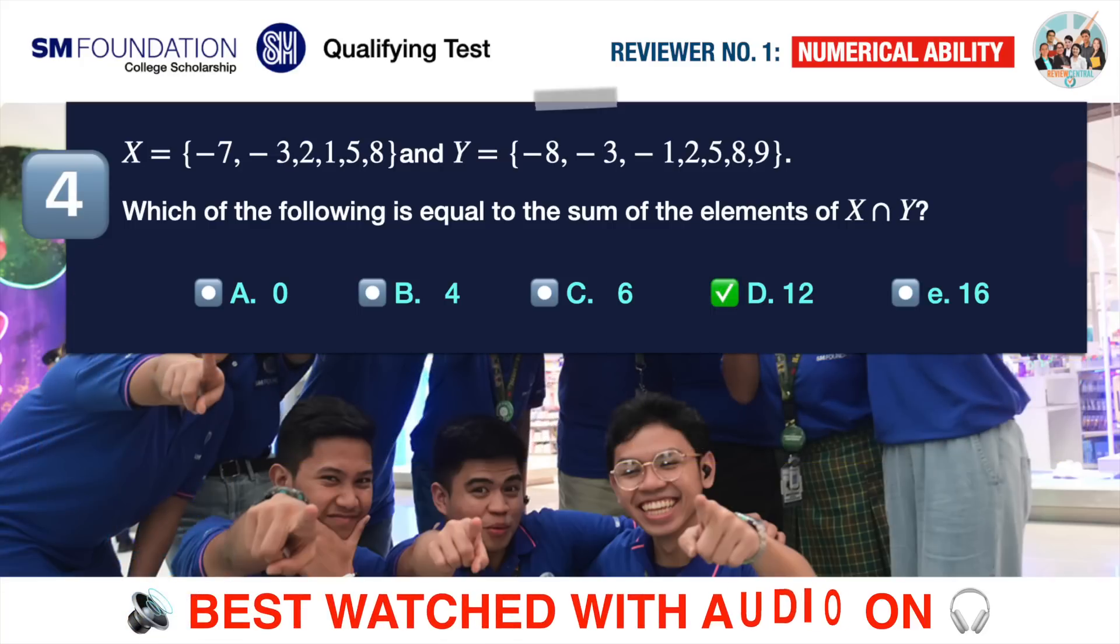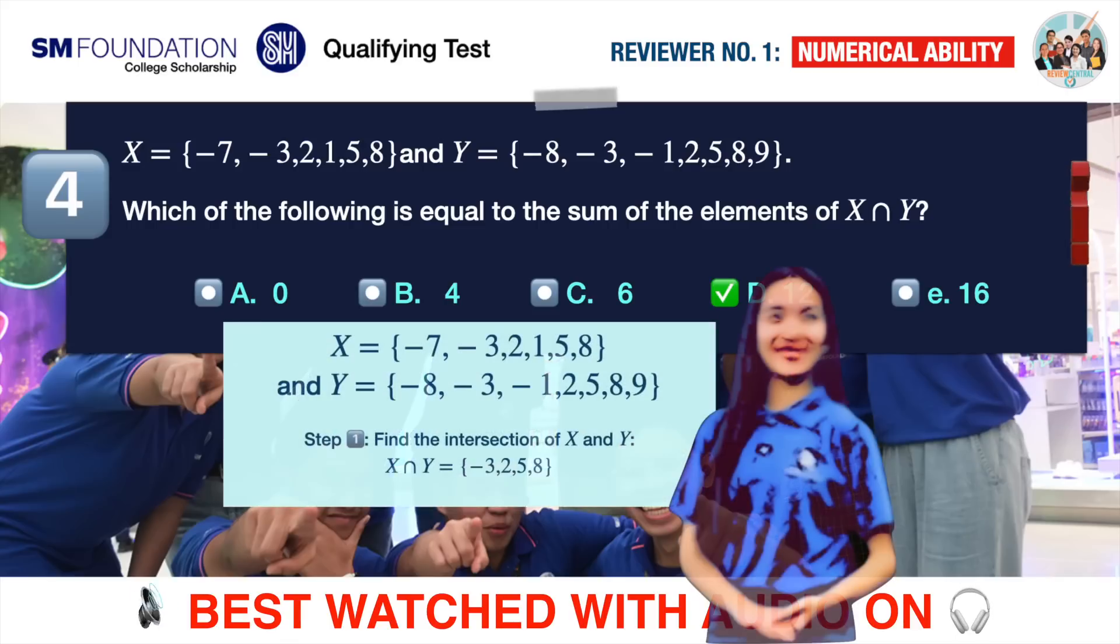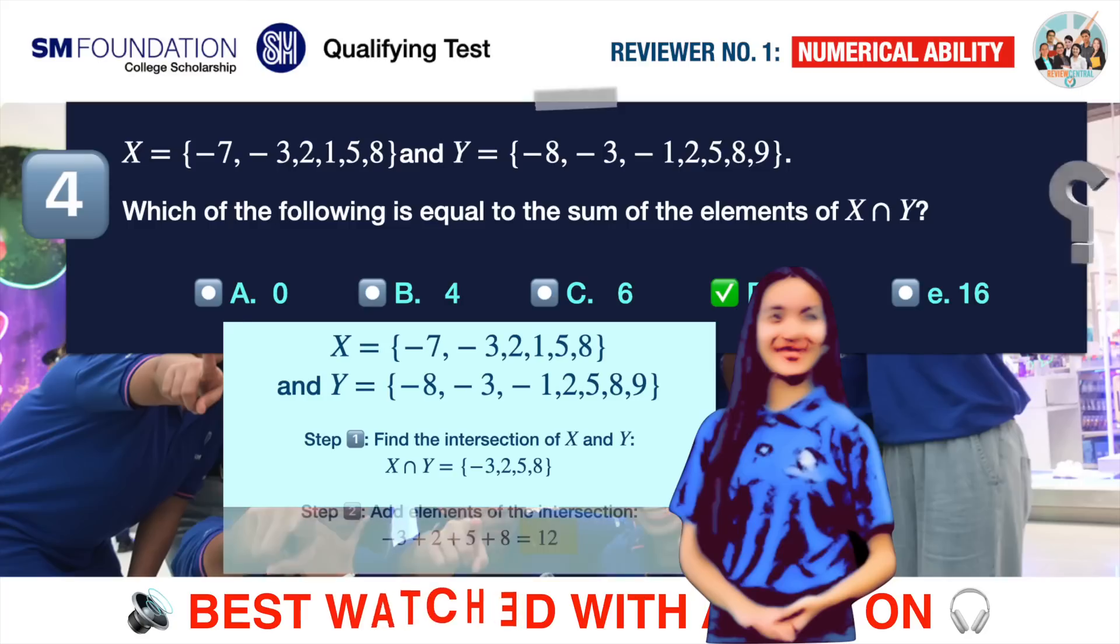The correct answer is D. 12. Step 1. Find the intersection of x and y. This will be the set of numbers, minus 3, 2, 5, and 8. Step 2. Add the elements of the intersection. Minus 3 plus 2, plus 5, plus 8, equals 12. 12 is the correct answer.